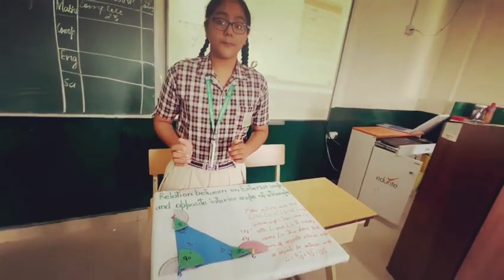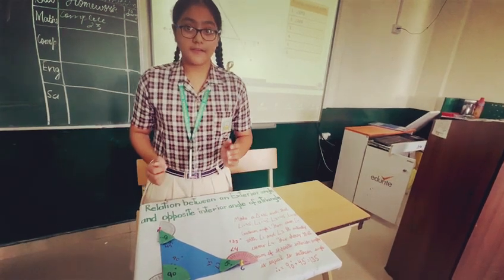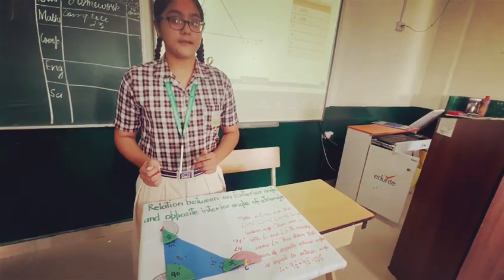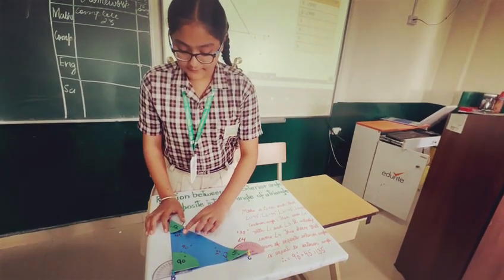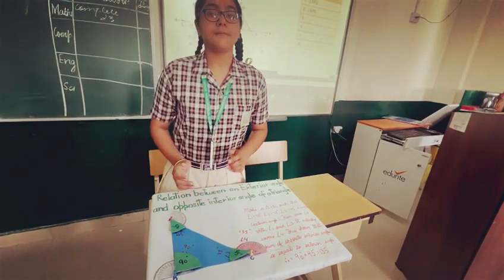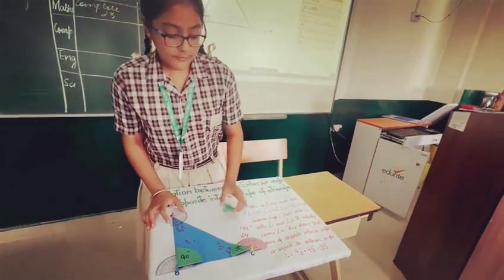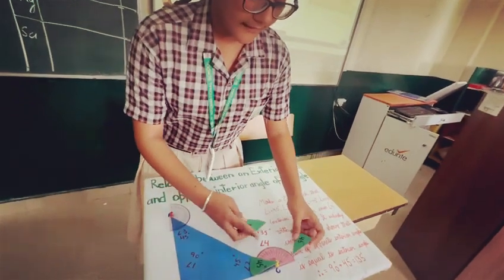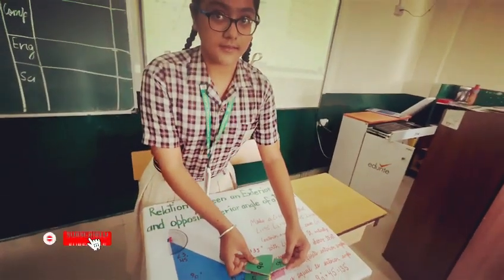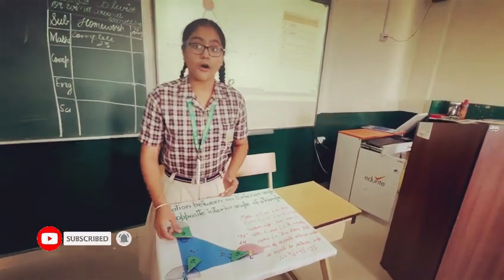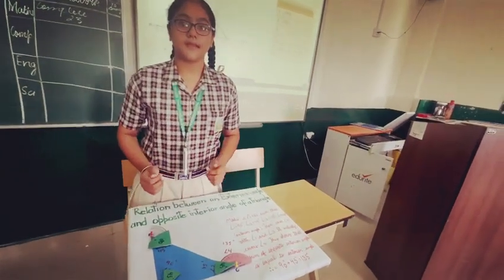According to the property, it states that the exterior angle equals the sum of the two opposite interior angles. When we add 90 and 45, it comes to 135, which is our exterior angle. We can also place the angles 90 and 45 here — they would entirely cover the exterior angle. This shows that the sum of two opposite interior angles makes up our exterior angle.